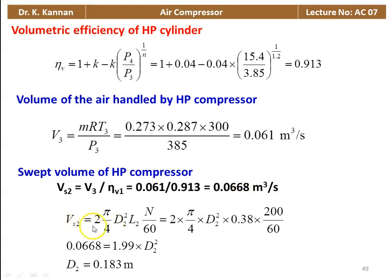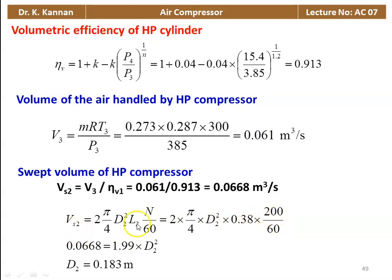Swept volume of HP compressor: Vs2 = V3 / η_V = 0.061 / 0.913 = 0.0668 m³/s. Also Vs2 = 2 × (π/4) × D2² × L × N/60. Substituting: 0.0668 = 2 × (π/4) × D2² × 0.38 × 200/60 = 1.99 D2². So D2 = 0.183 meter. Diameter of the HP cylinder is 0.183 meter.